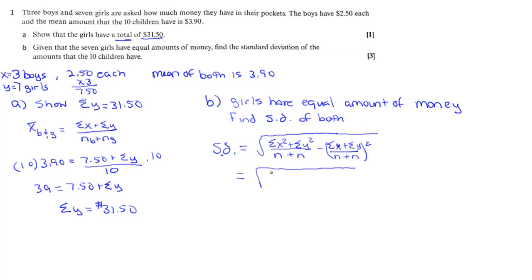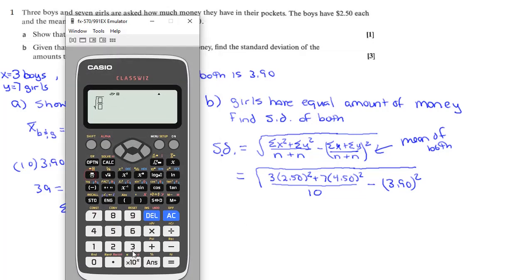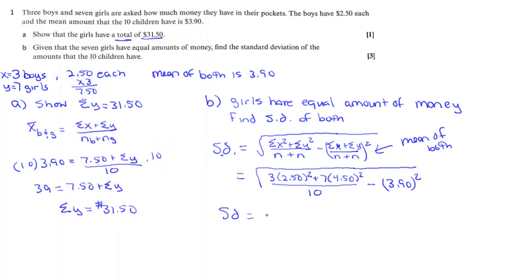We know there are three boys who each had two fifty, so we square two fifty and multiply by three. The girls each have four fifty, so we square those and multiply by seven, divide by ten, and the mean given at the very beginning is three ninety. I'll just type this into the calculator — I don't need to do all the incidental calculations, I just need to give an answer. The standard deviation is 0.9165.